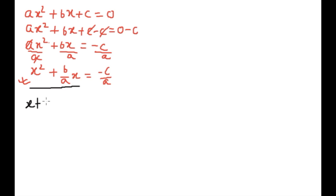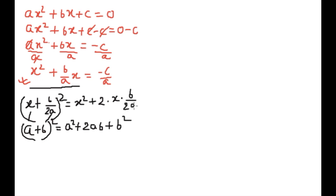So if we know (a + b) whole square is equal to a^2 + 2ab + b^2, here a is x and b is b/2a, so we can write this: x^2 + 2 times x times b/2a plus (b/2a) whole square. The 2s cancel, so x^2, b/2a times x, b/2a times x.